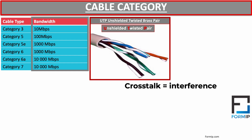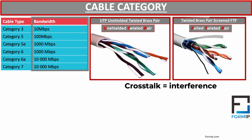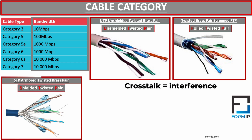UTP consists of four pairs of unshielded wires twisted together to avoid interference, i.e., crosstalk. This type of cabling is mainly used on local area networks. There is also the foiled twisted pair, the FTP standard, where a shield is added to all four pairs of the cable. And we have the shielded twisted pair, STP, which has an aluminum shield on each pair of the cable — adding protection against electromagnetic interference and cable leakage.